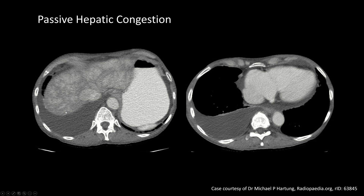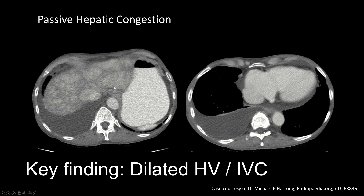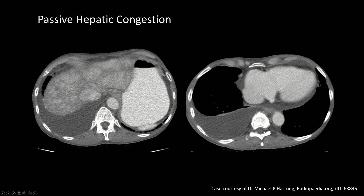Along with these parenchymal changes, you're also going to see in these patients dilated IVC and hepatic veins, as you see here in this case. This is the key finding that, in addition to the parenchymal findings, indicates passive hepatic congestion. You'll often also see a dilated right atrium or some other cardiac process. Down the line, this can lead to findings of portal hypertension and cirrhosis.